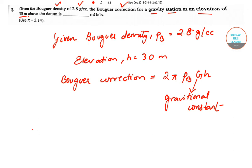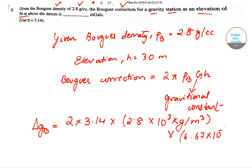So delta Gb is equal to 2 into 3.14, we are just substituting the values into 2.8 into 10 to the power 3 kg per meter cube into 6.67 into 10 to the power minus 11 into 30.